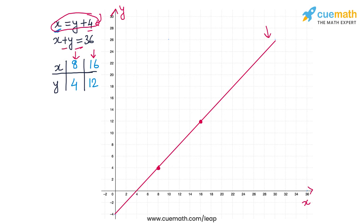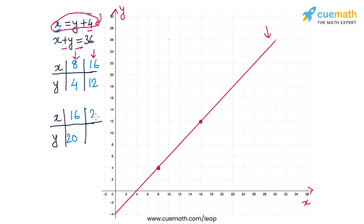For the second equation x + y = 36, let's find two easy-to-plot solutions. If x = 16, then y = 20. If x = 26, then y = 10. So two solutions of the second equation are (16, 20) and (26, 10).